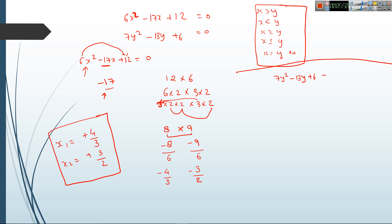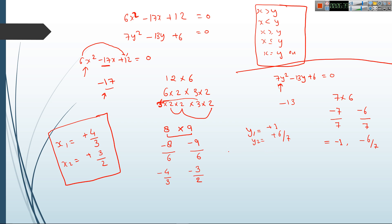Now the second equation: 7y² − 13y + 6 = 0. Multiply 7 × 6 = 42, and we need to reach −13 by adding. We can see 7 + 6 = 13, so write −7 and −6: adding gives −13 and multiplying gives +42. Divide by the coefficient of y², which is 7: giving −1 and −6/7. Changing the sign gives y₁ = +1 and y₂ = +6/7.